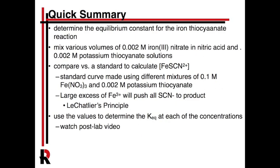The way we're going to do this is we're going to have two solutions of iron nitrate — a 0.002 molar iron nitrate solution, which will totally dissociate to iron ions. We also have potassium thiocyanate, which will give us the thiocyanate anion. We're going to mix various ratios of these, and it's going to get different colors of red depending on how much iron thiocyanate was made.